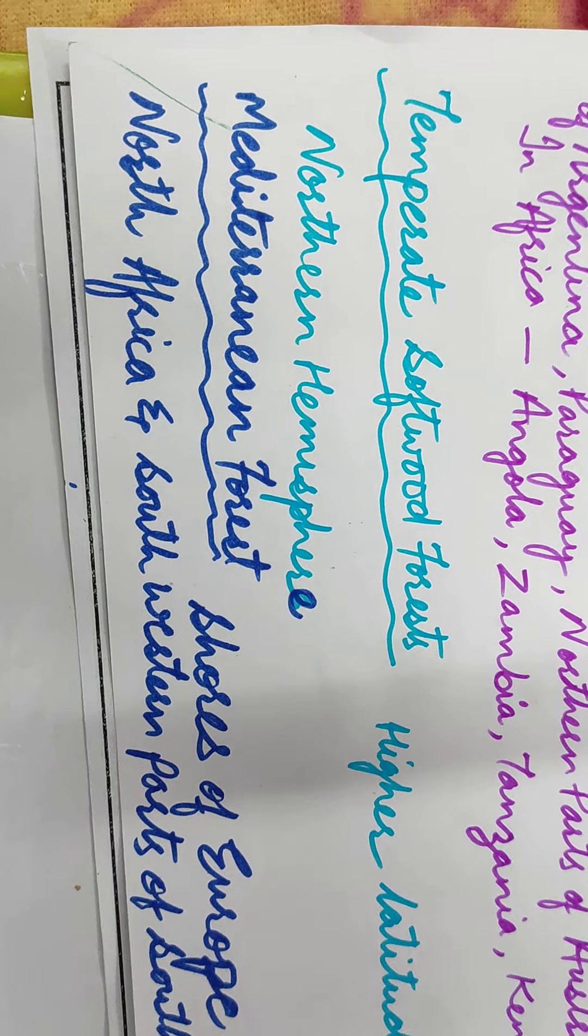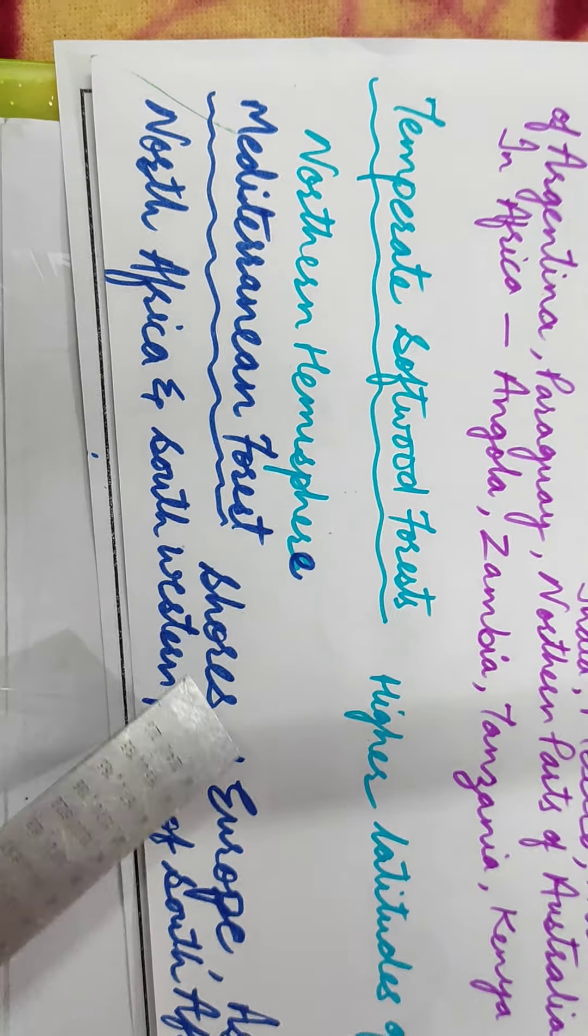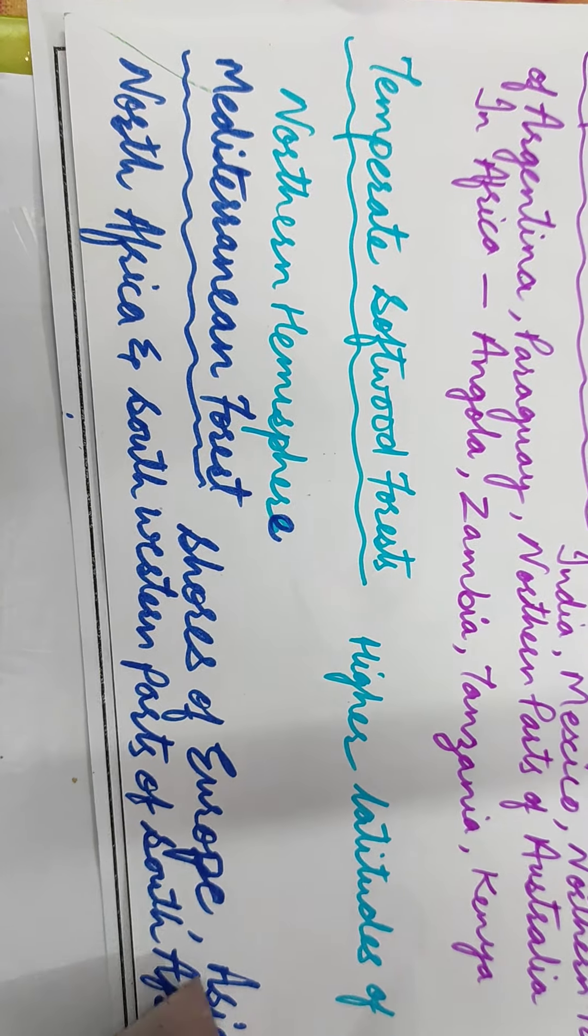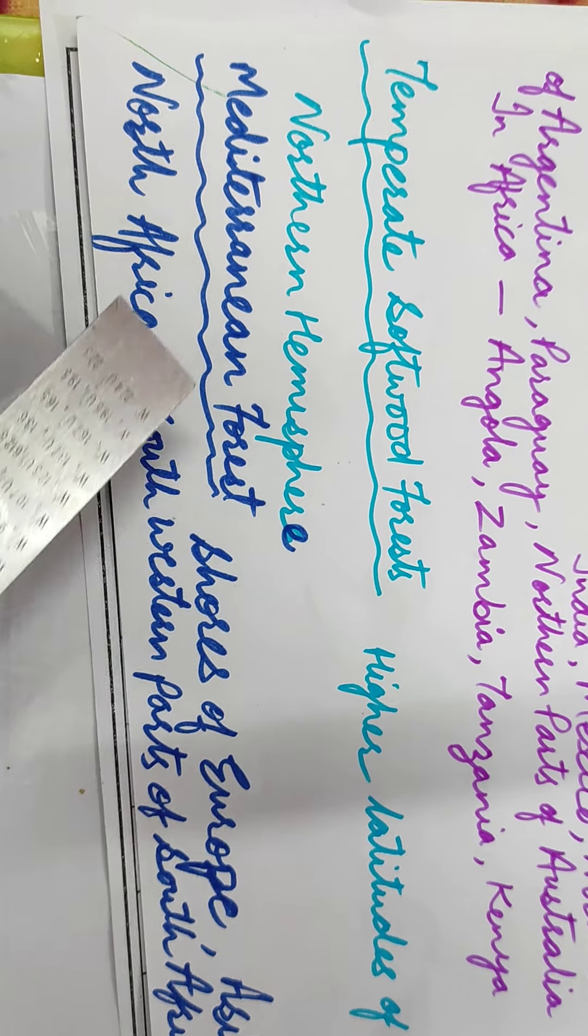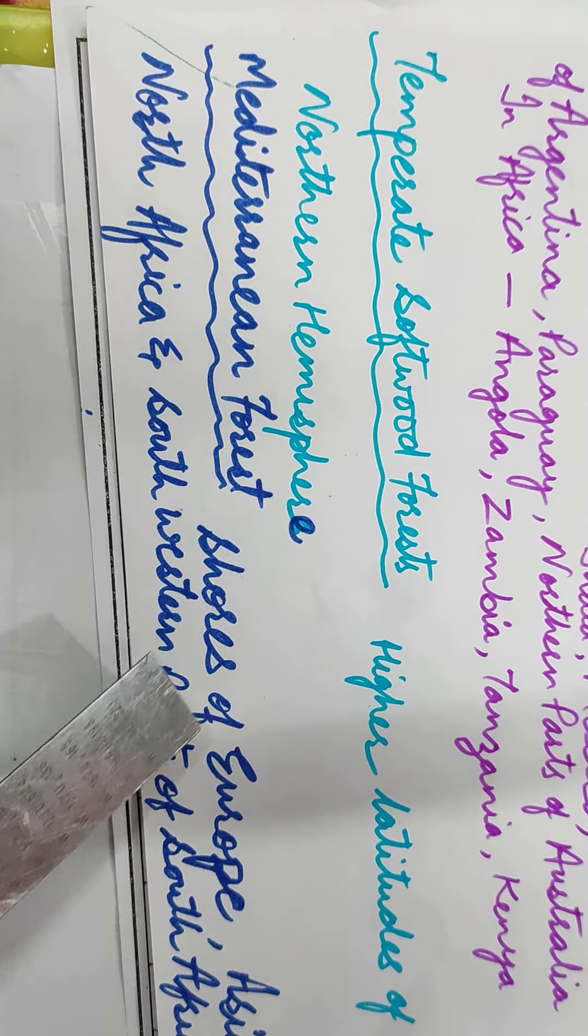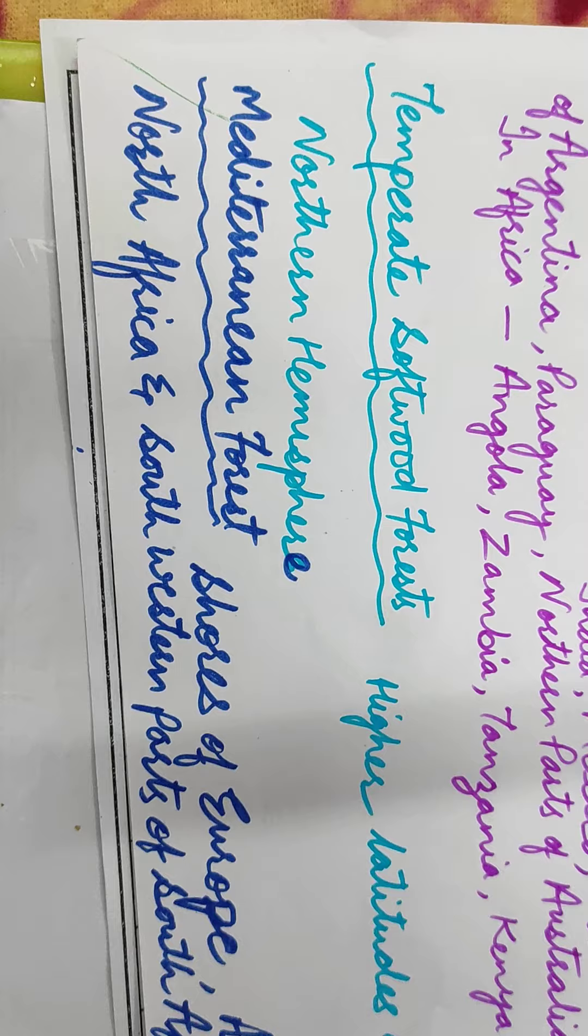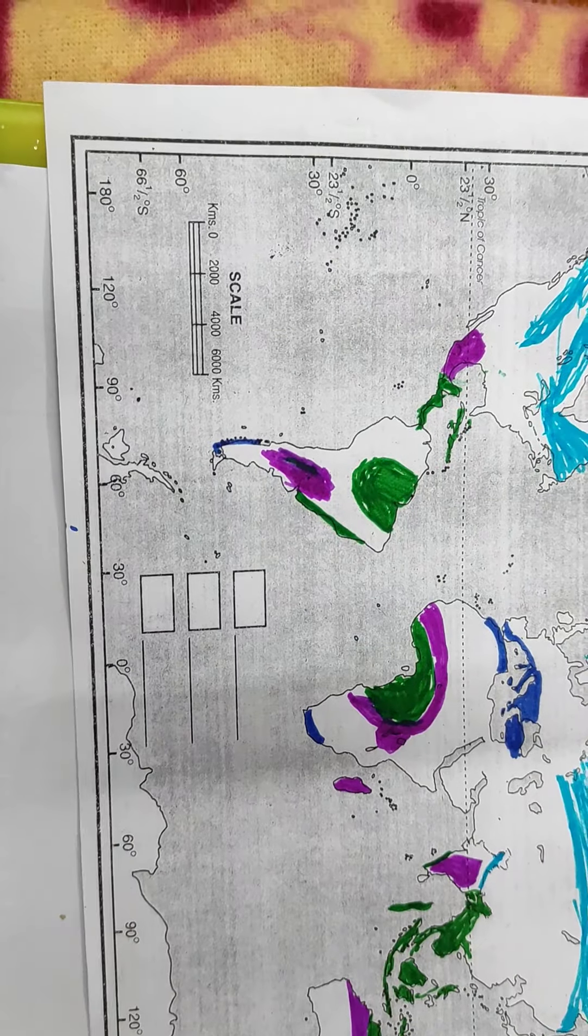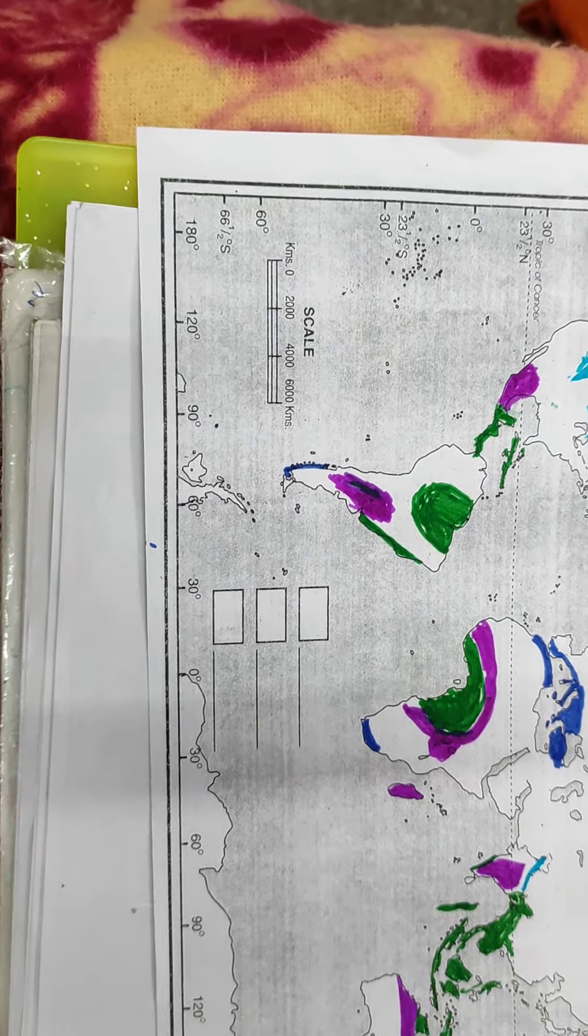Mediterranean. Mediterranean forests - shores of Africa, Europe, Asia, North Africa, South Western parts of Africa, Asia, sorry America. Here we have Mediterranean forests.